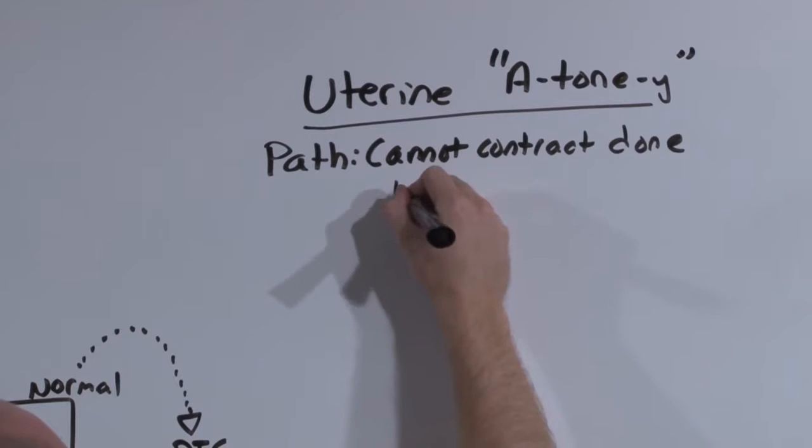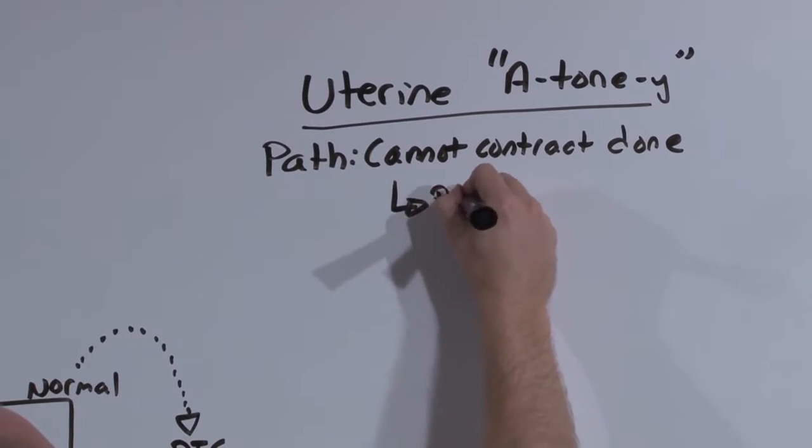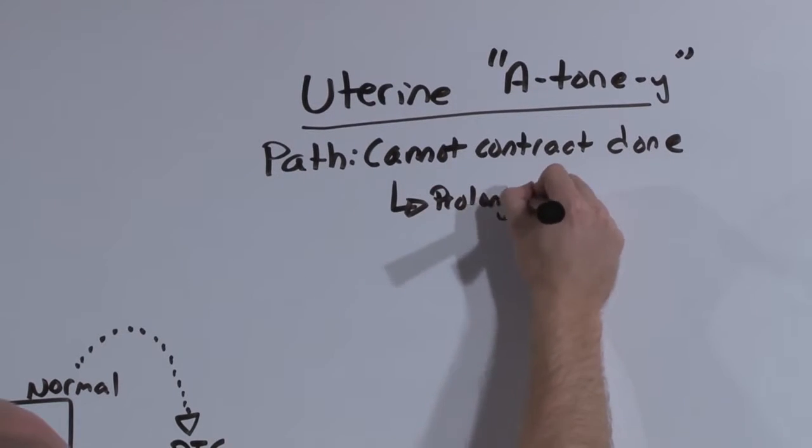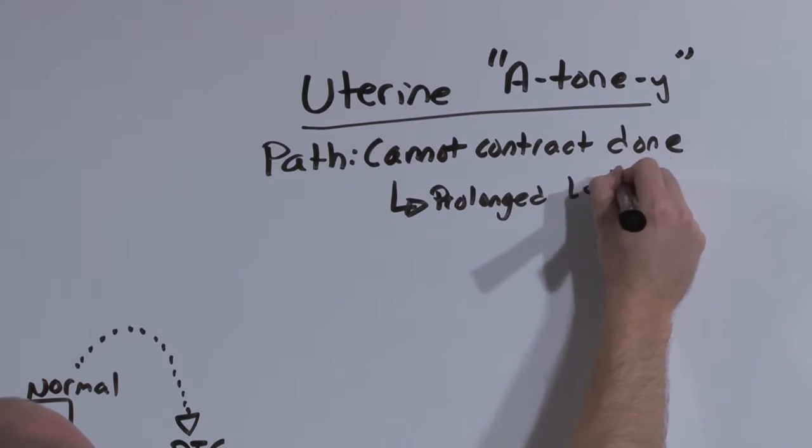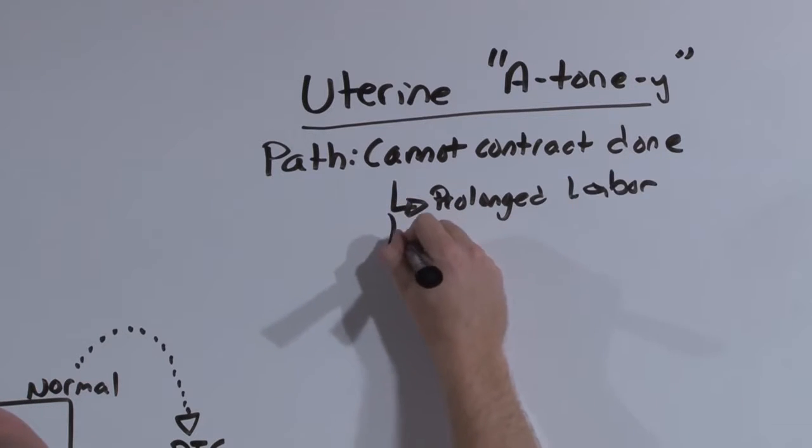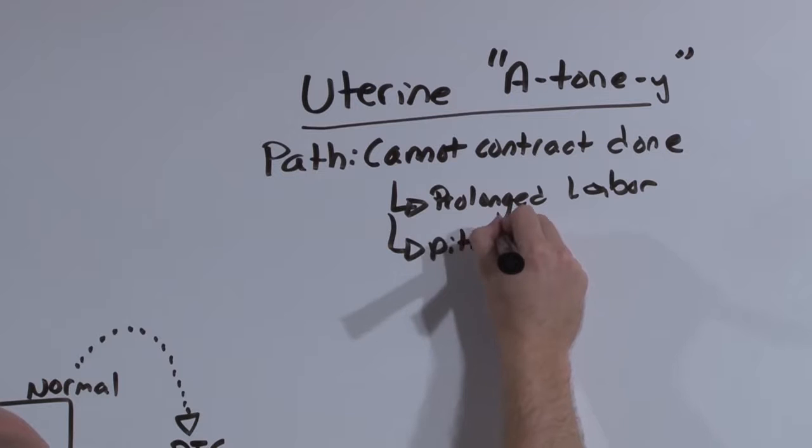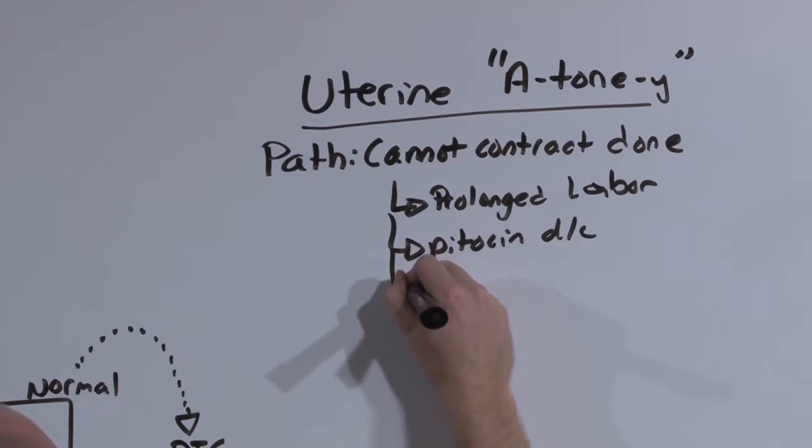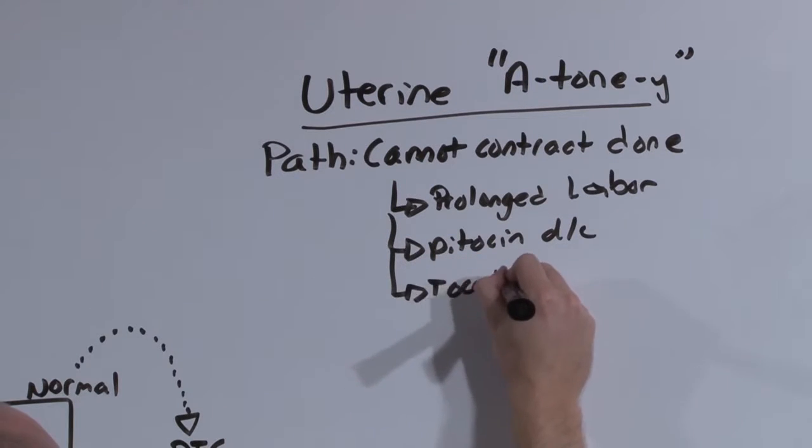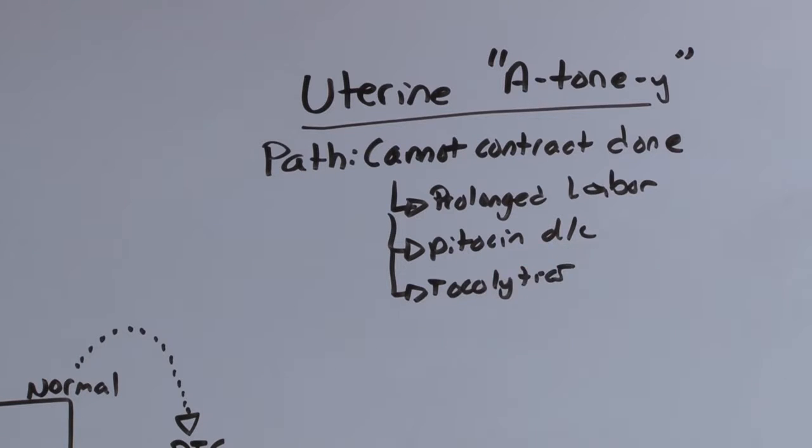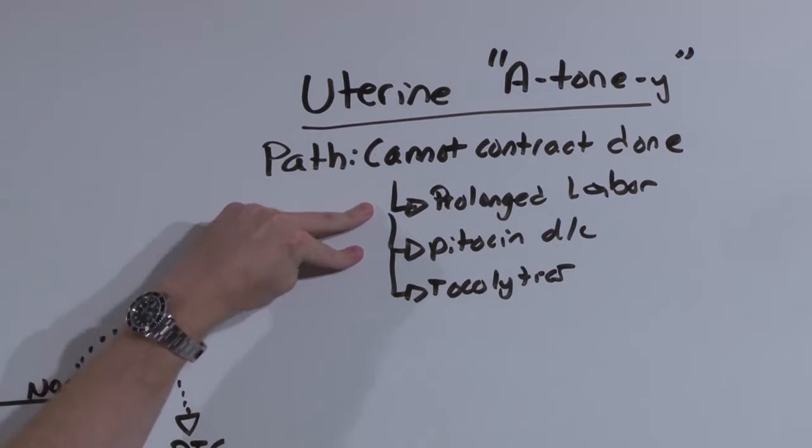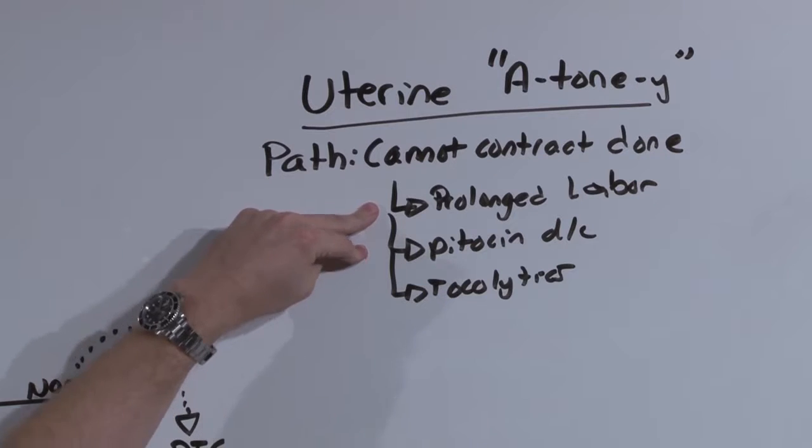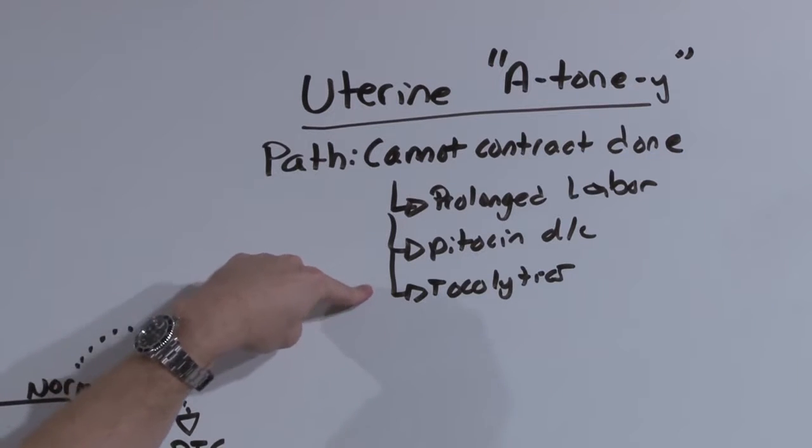In this condition, you essentially have a floppy uterus which cannot contract down. This is usually a product of a prolonged labor, a labor that used Pitocin that you just turned off but turned off too soon, or in the case of use of tocolytics. You either worked the uterus too hard and now it's pooped, or you gave it a medication to tell it to chill out.